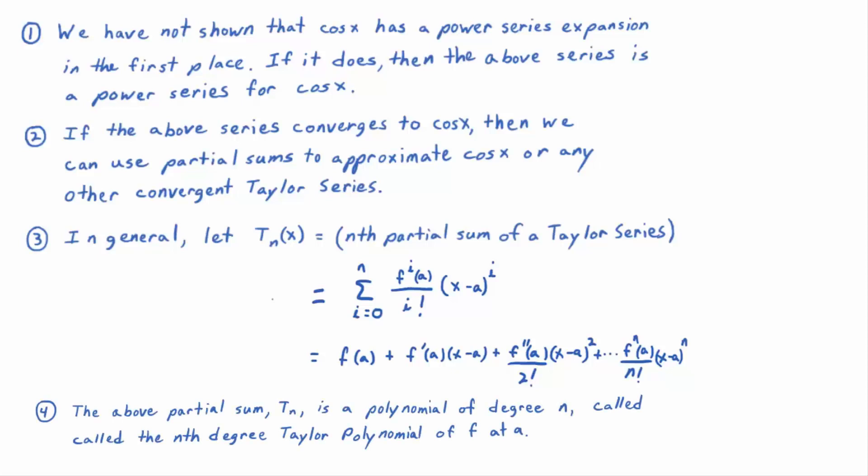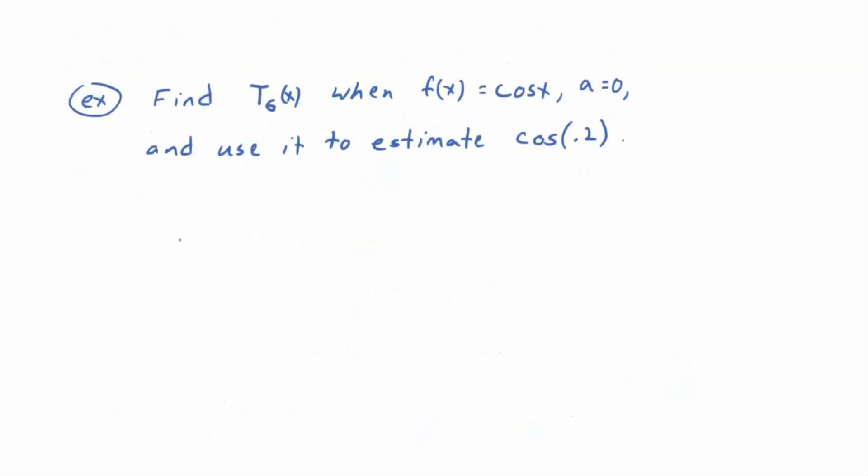The above partial sum T_n is a polynomial of degree n, called the nth degree Taylor polynomial of f at a. Let's find T_6(x) when f(x) equals cosine of x and a equals zero, and use it to estimate the cosine of 0.2. This can get a little confusing if you use the formula directly, so what we're going to do is just write out longhand the sum we developed for cosine of x and stop when we get to an exponent of six. Does that make sense?